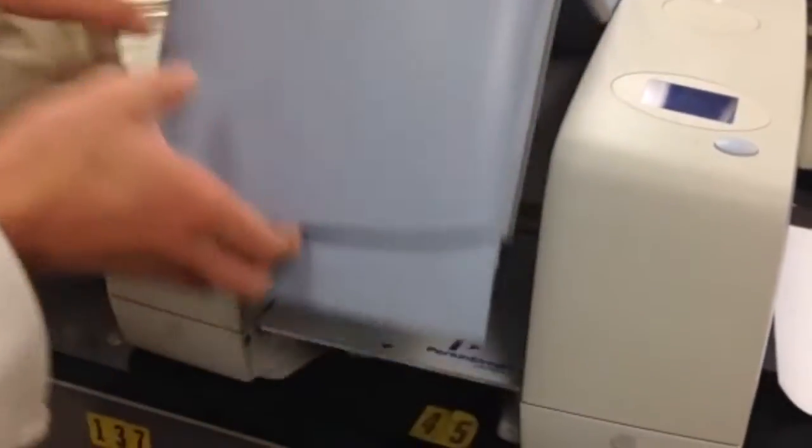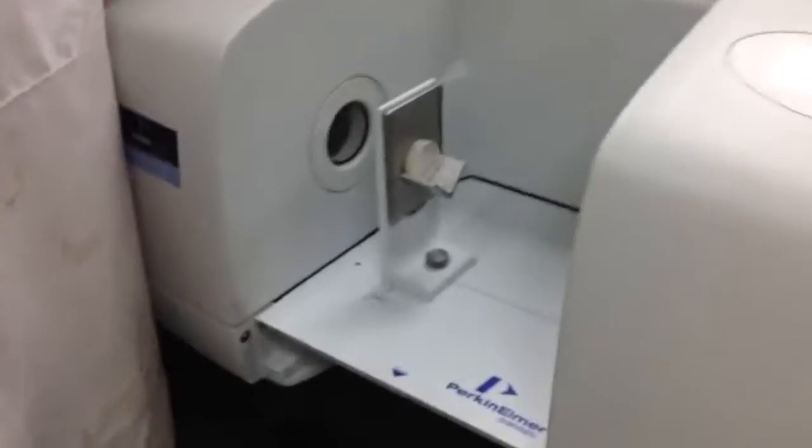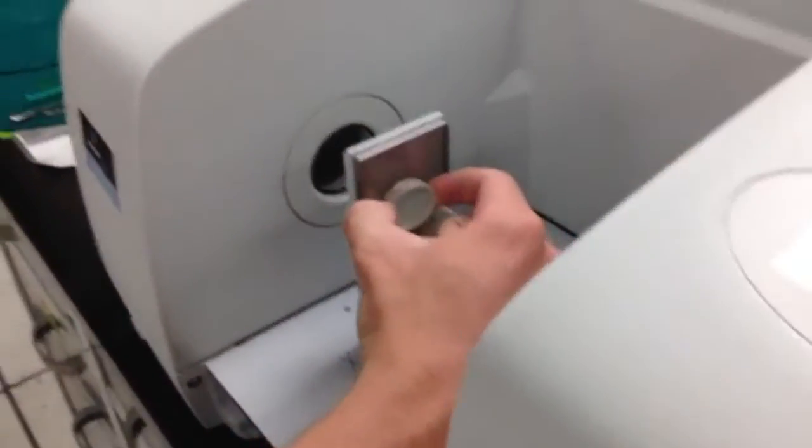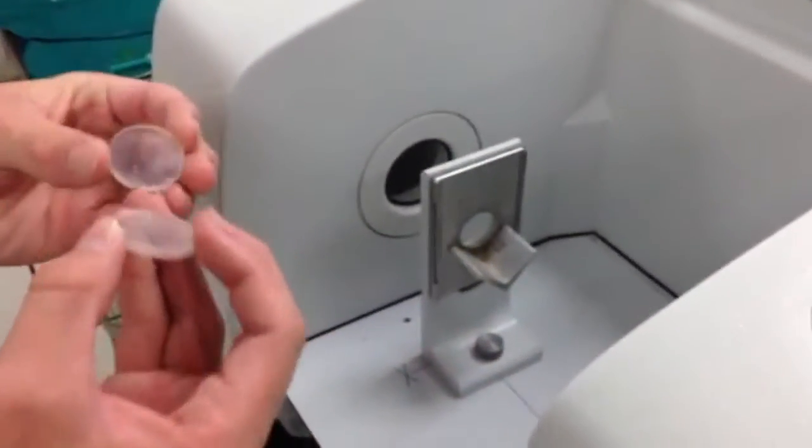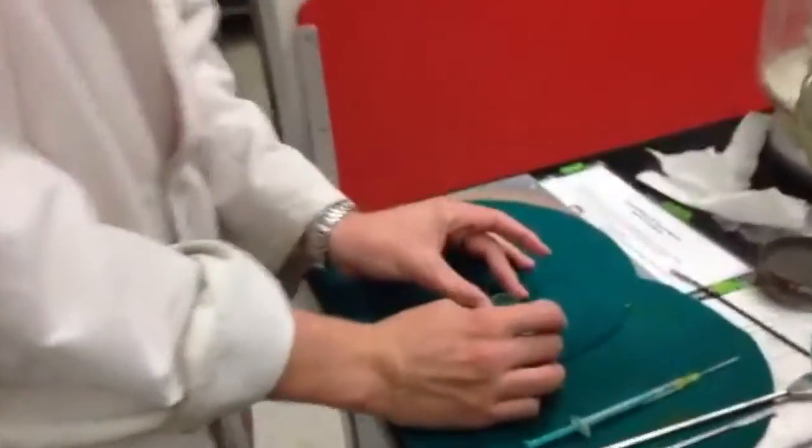Go back over to the IR machine and open the lid and take out your salt disks. Separate the two of them and set each one on the felt so that you can begin to prepare your sample.